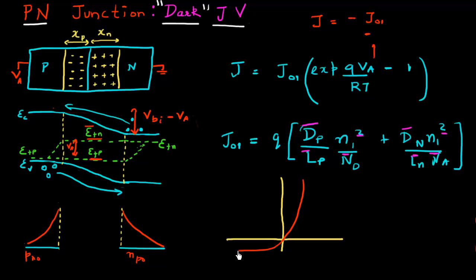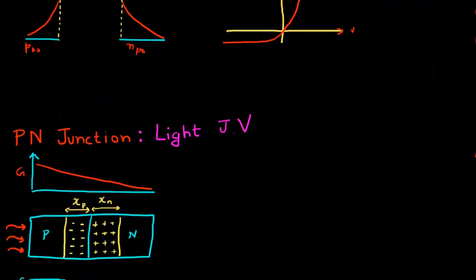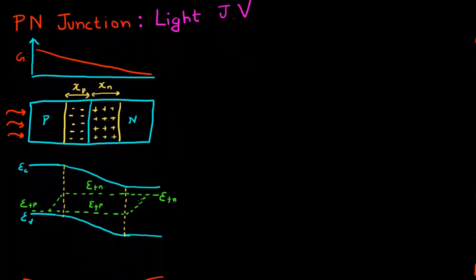So this is how the IV relationship looks: if I apply a positive voltage, there's a large change in current, whereas if I apply a negative voltage, there's only a small change in current. Now let's move to the case where we apply light on this PN junction.